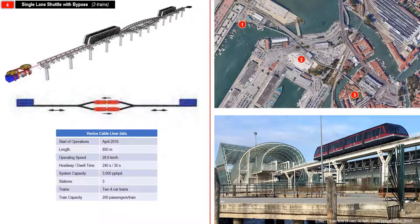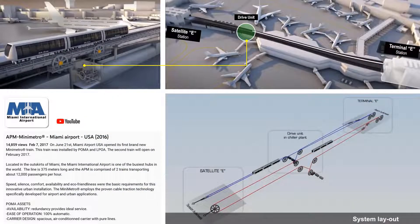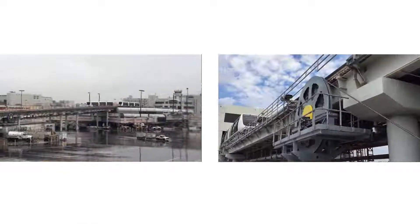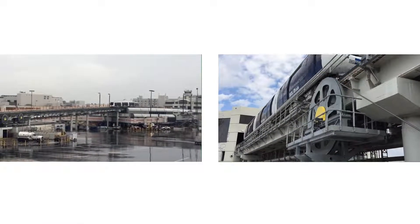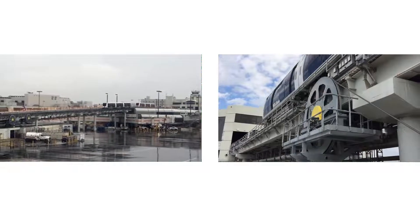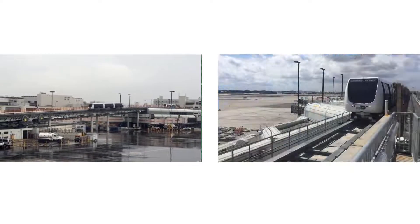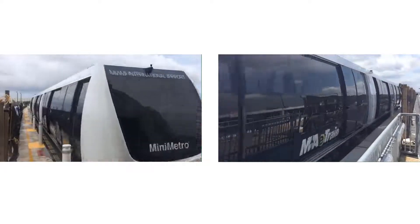The single lane with bypass cable liner uses only two trains between stations — they do not bump into each other because of the bypass. This is used in the three-station cable liner line in Venice, Italy. An example cable liner where you can see the bull wheel drive mechanisms along the route is the Miami International Airport cable liner. If this were installed in a Philippine city, it would be a tourist attraction, just like other CPTs where the drive mechanisms can be seen.